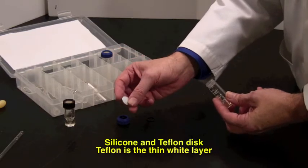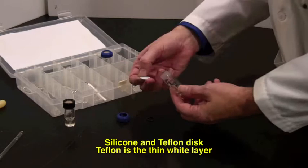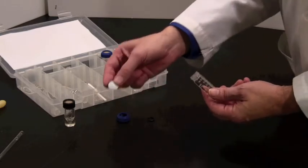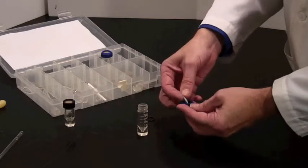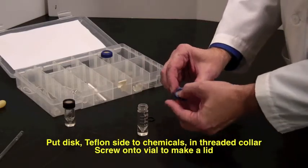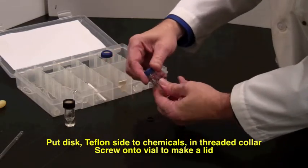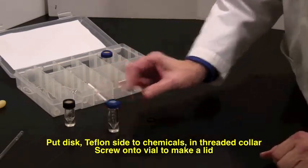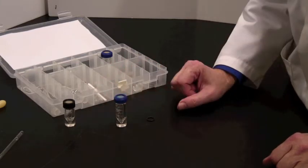The teflon is the white, shiny, thin layer, and the teflon goes chemical side down. If you're going to use this as a lid, you pop the silicone disc inside the cap like that, and then screw it on. That has now got a lid on it. You can leave chemicals in there indefinitely.